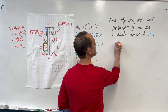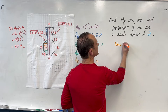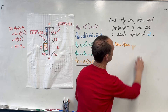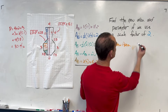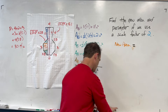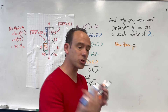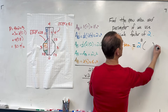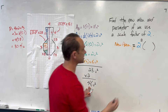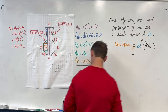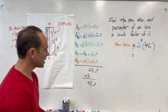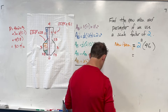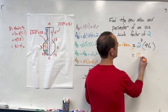New area equals the old area times the square of the scale factor: 2² × 46 = 4 × 46 = 184 units squared. That's the new area.